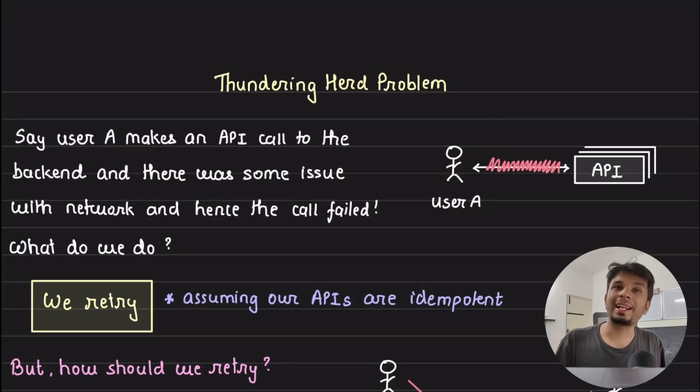When the network is unreliable, clients retry APIs to ensure completion. This approach works when there are fewer clients, but what happens when there are millions of them? Every single client will keep on retrying until the API is completed. This will bombard the server with requests, and this problem is called a thundering herd problem.